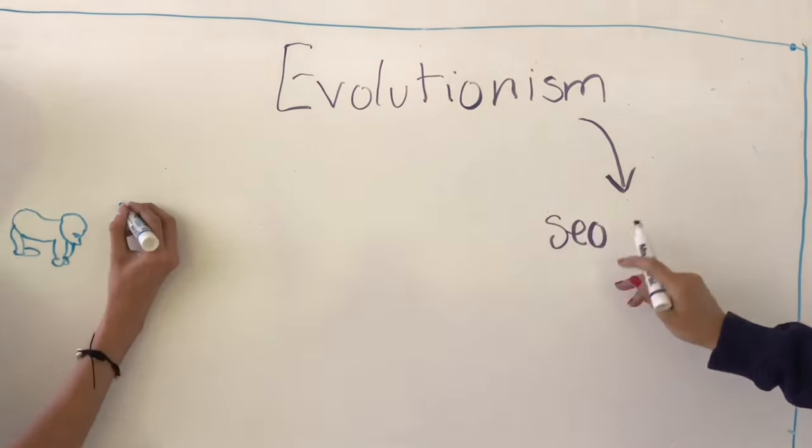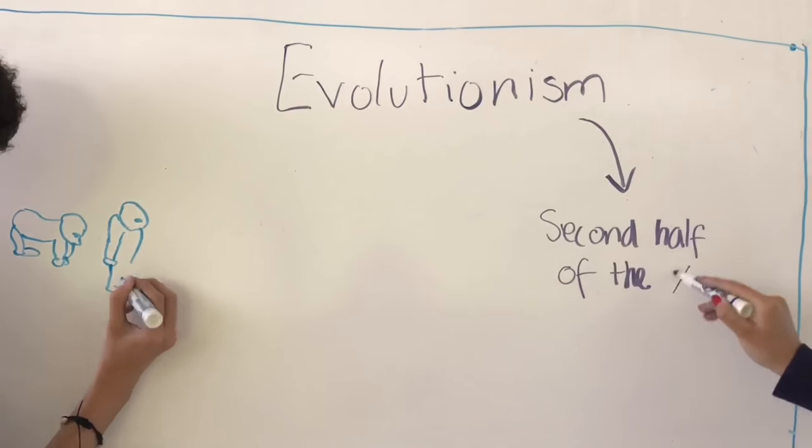Evolutionism is a theory that postulates the evolution from barbarism to civilization.